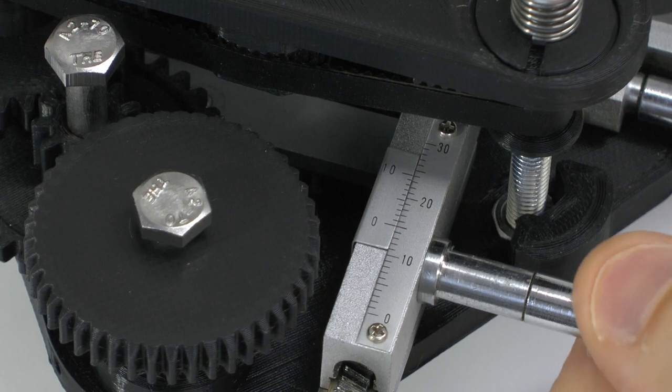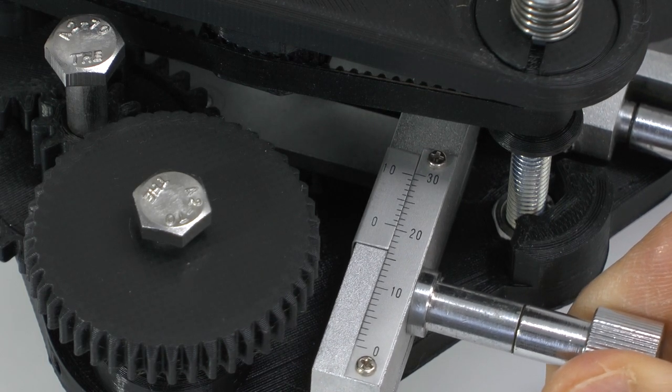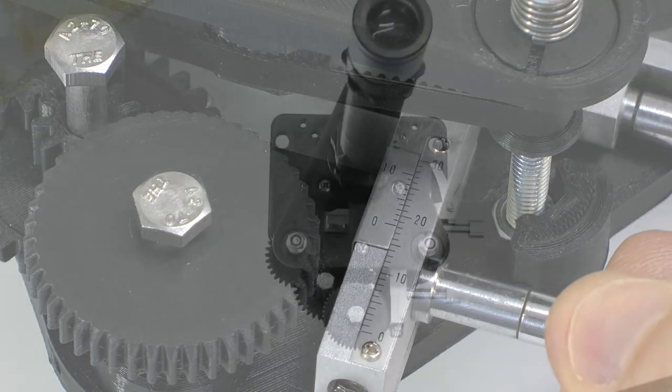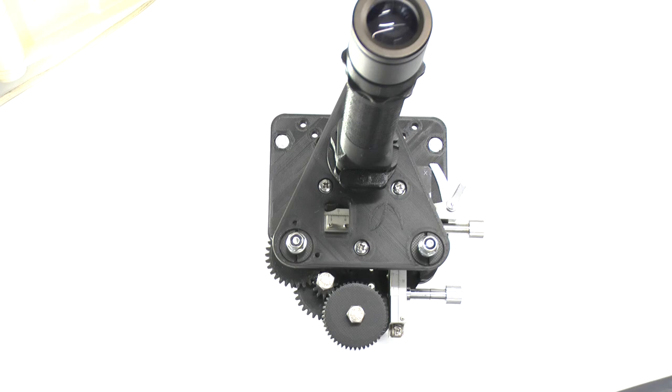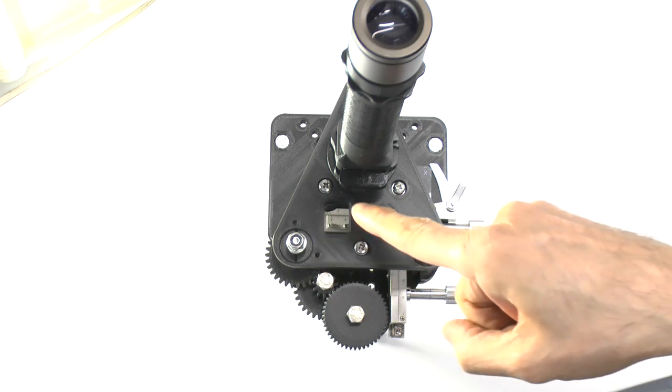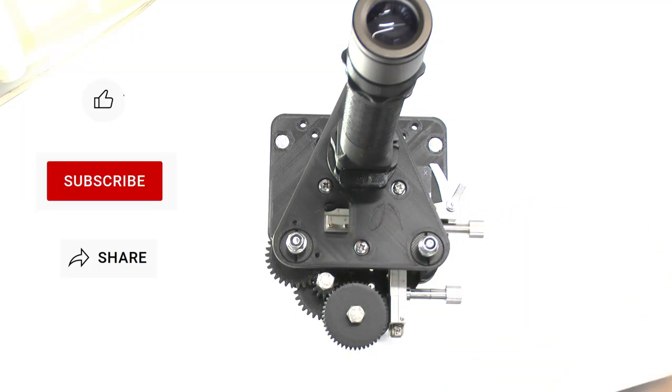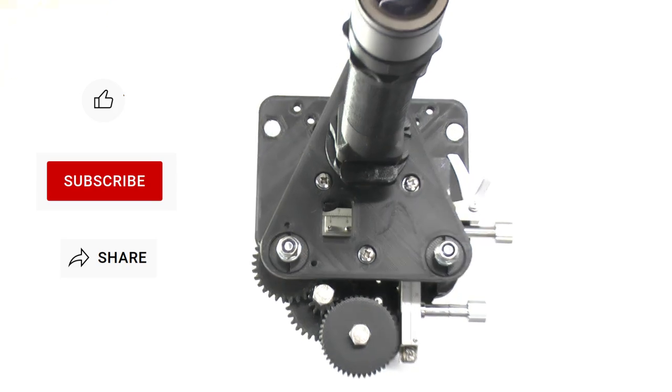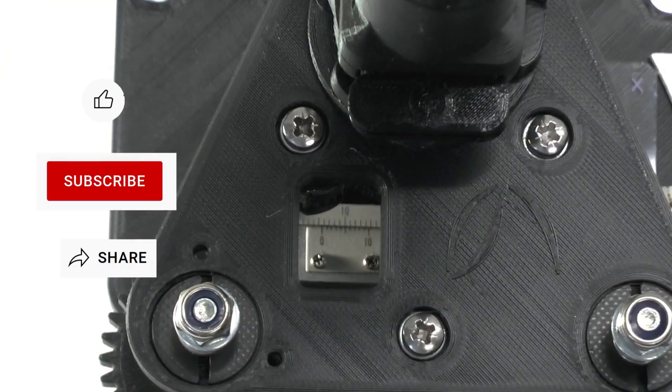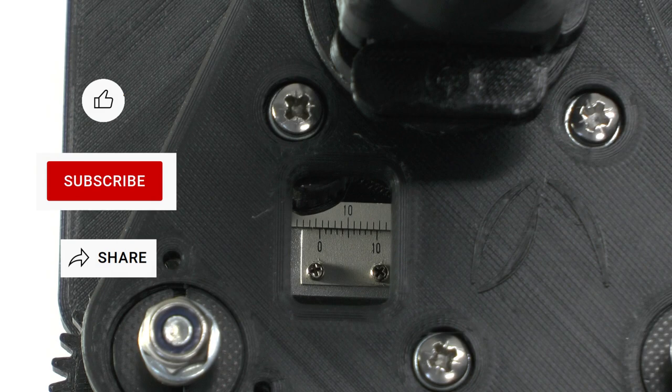Use of the vernier scales to measure distances to 0.1 mm accuracy is described in many tutorials, so I won't repeat that here. However, I'll take this opportunity to mention that this rectangular window in the focus platform was originally designed here to allow you to read the vernier scale on the x-axis, because otherwise all the focusing mechanism of the Puma scope will make it difficult to see.